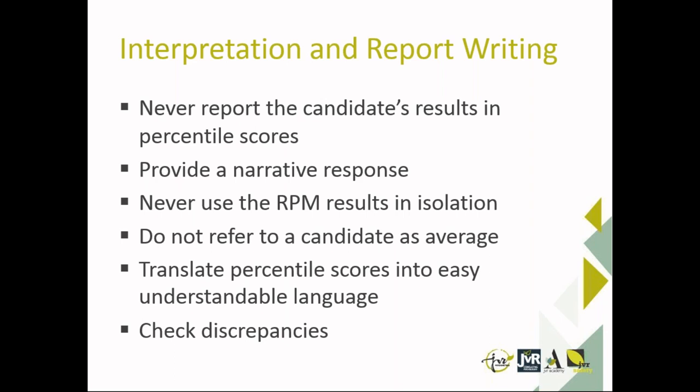Regarding the Ravens Progressive Matrices and the Flynn effect: it can be observed, but whether the candidate is from a developed or developing country affects the magnitude. With increasing age, Ravens scores decline each year by about half an IQ point. Childhood IQ did not co-vary with either age or practice effects, meaning that the influence of childhood IQ is a fixed effect on fluid intelligence in later life.